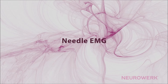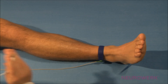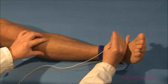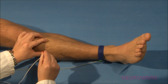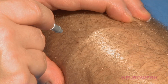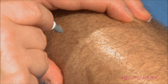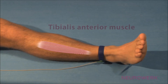Needle EMG. The implementation of the needle EMG is basically equal for all muscles that are accessible for this examination. Therefore, the examination on the tibialis anterior muscle is shown as an example. The techniques outlined and described herein are essentially repeated in all other muscles, and this particularly concerns the basic application of the needle electrode and the muscle activation.